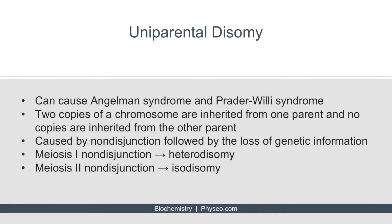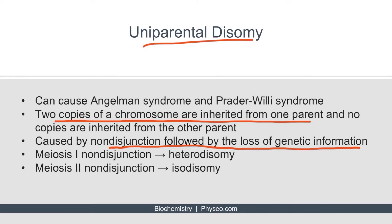Angelman syndrome and Prader-Willi syndrome can also be caused by uniparental disomy. Uniparental disomy refers to the idea that two copies of a chromosome are inherited from one parent and no copies are inherited from the other parent. For example, normally one copy of chromosome 21 is inherited paternally and one copy is inherited maternally, but if both copies are inherited maternally, this is called uniparental disomy. Uniparental disomy is caused by non-disjunction followed by the loss of genetic information. Non-disjunction during meiosis 1 results in heterodisomy, and non-disjunction in meiosis 2 results in isodisomy.